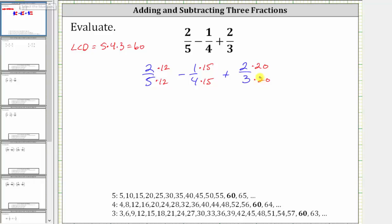And now let's write the equivalent fractions. Two fifths is equivalent to 24 60ths.